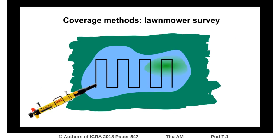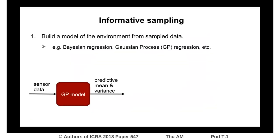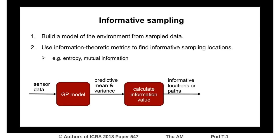One approach for more efficient sampling is adaptive informative sampling. In informative sampling, you build a model of the environment from sampled data using your favorite modeling technique. In our case, we use Gaussian process regression. Then, you use information theoretic metrics such as entropy to find informative sampling locations.